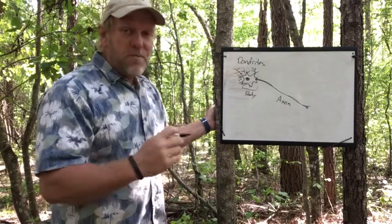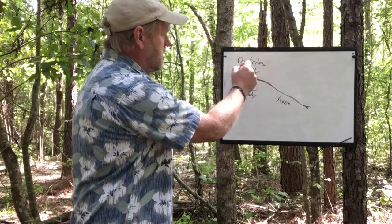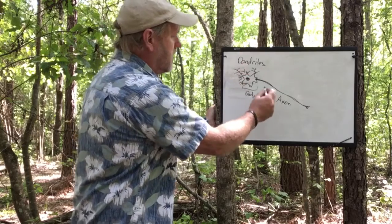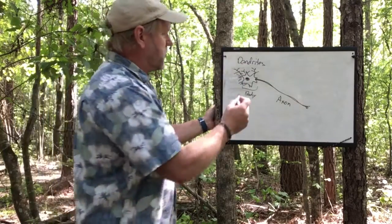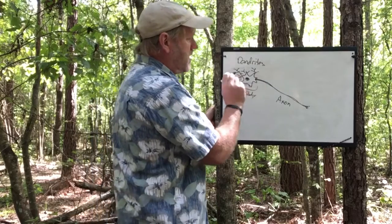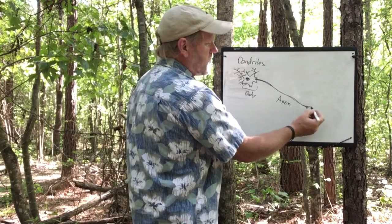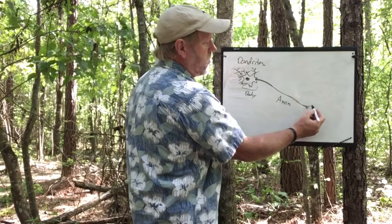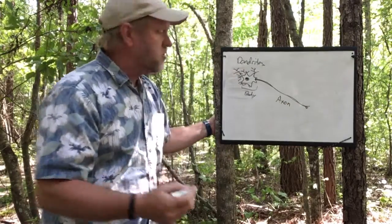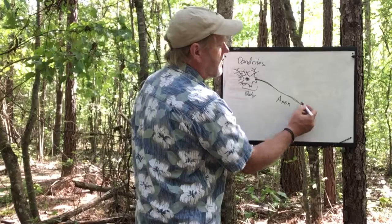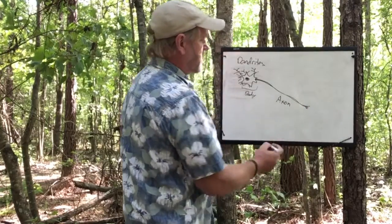Those are the three major parts to a nerve cell: the body, the dendrites, and the axon. The signals will always go from the dendrites toward the axon, and then from the axon this cell will carry the signal through chemical messengers called neurotransmitters to the adjacent nerve next to it.